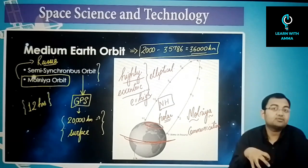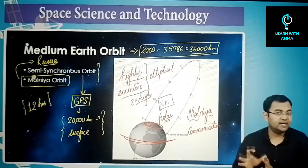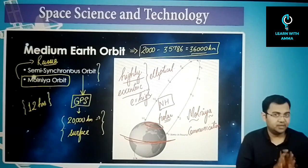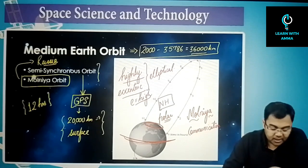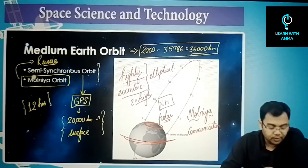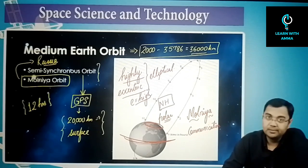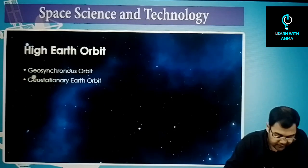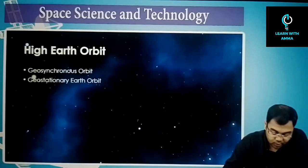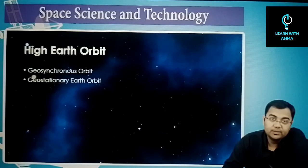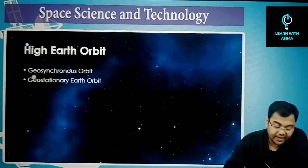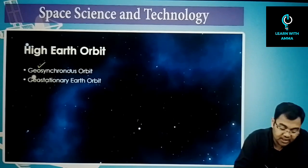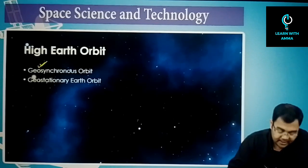The Molniya orbit was invented so Russia could take care of their communication needs. So medium earth orbit has two important types: the semi-synchronous orbit and the Molniya orbit. We then come to the high earth orbit, which has two kinds — the geosynchronous orbit and the geostationary orbit.